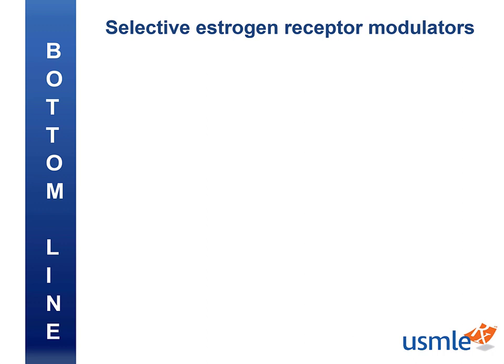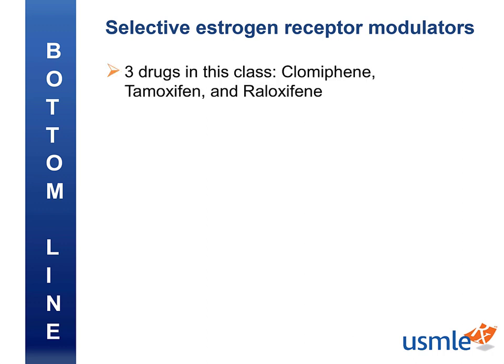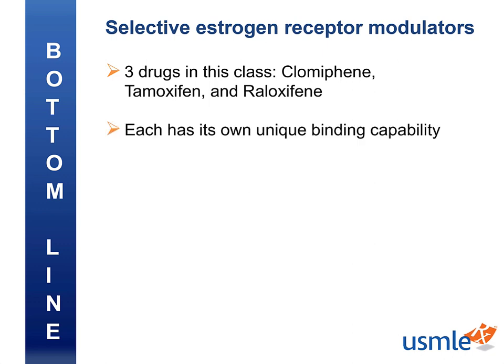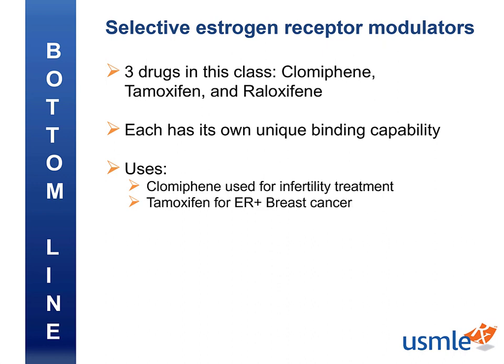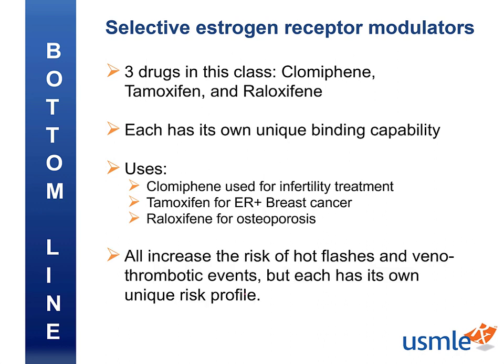Wrapping up the SERMs lecture, we learned that there are three main drugs in this class: clomiphene, tamoxifen, and raloxifene. Each has its own unique binding capability. Clomiphene is used mainly for infertility treatment, tamoxifen for estrogen receptor positive breast cancer, and raloxifene for osteoporosis. They all increase the risk of hot flashes and venous thromboembolic events, but each has its own unique risk profile. Thanks for watching, and be sure to click thumbs up if you enjoyed this video.